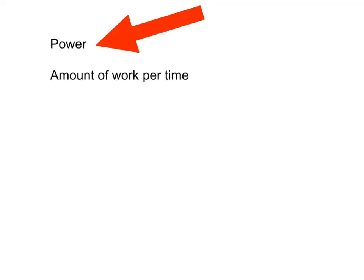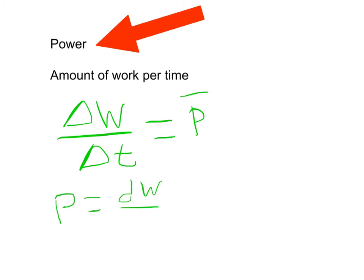The last topic is power. Power is the amount of work per time. So we're talking about the work over a change in time. That's average power. But if we're talking about instantaneous power, that's dw dt.